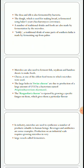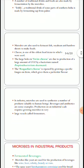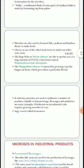Cheese is one of the oldest food items in which microbes were used. The large holes in Swiss cheese are due to the production of a large amount of CO2 by a bacterium named Propionibacterium sharmanii. Roquefort cheese is ripened by growing specific fungus on them, which gives them a particular flavor.